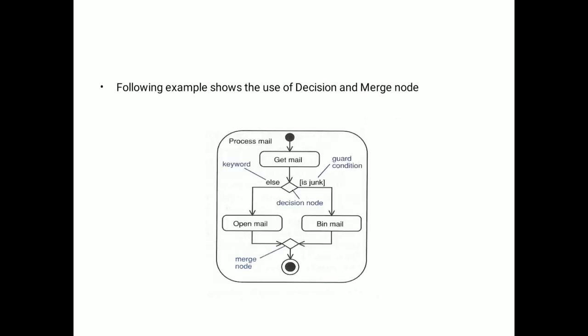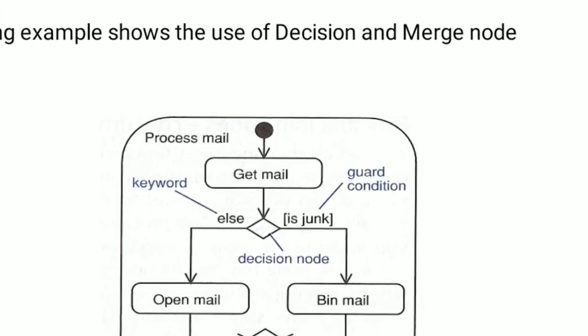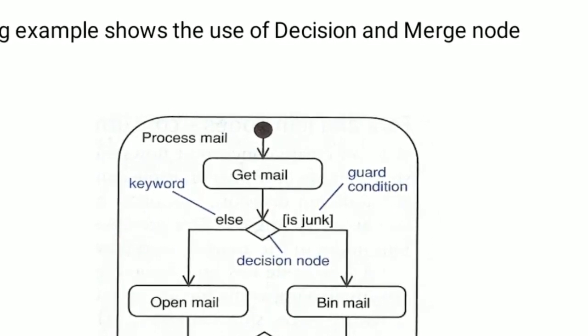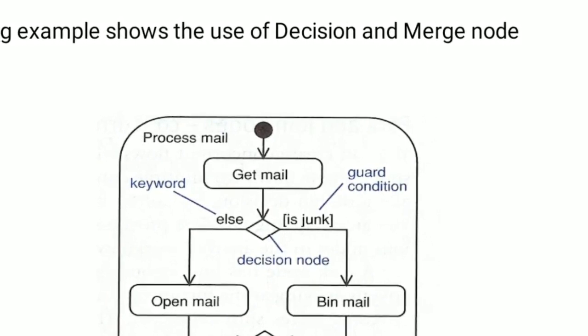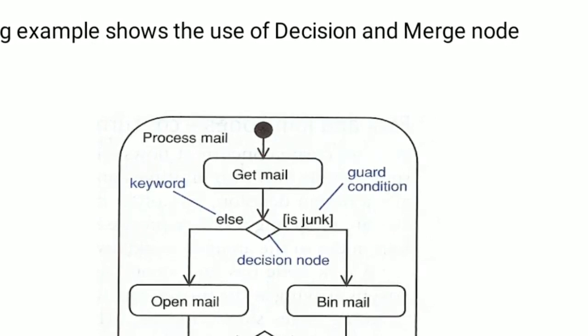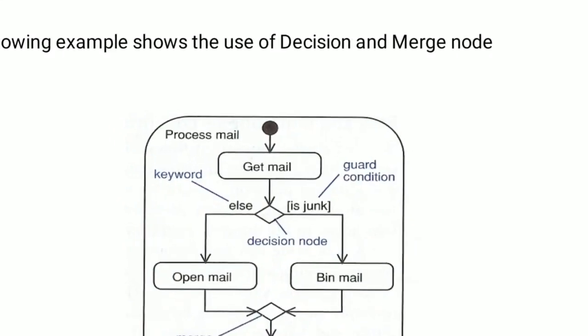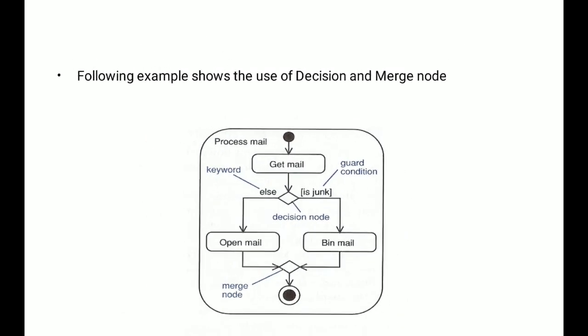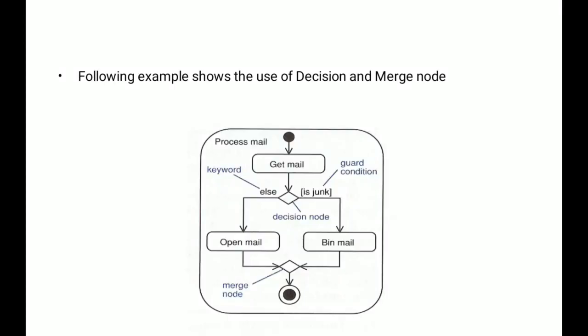With a good example, you see it. This is a good example of decision and merge node. Initial is here. Then process mail diagram: get mail. If mail is keyword or junk. If keyword, then open mail. If it is junk, or guard condition, bin mail. Then merge node, and finally your end. So this is the good use of decision and merge node.